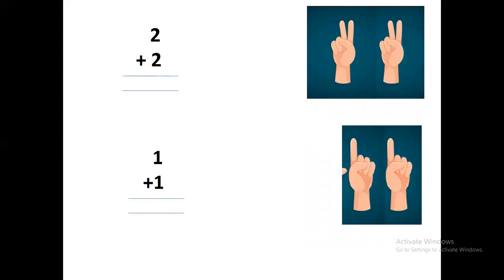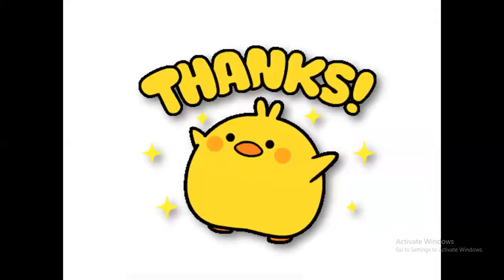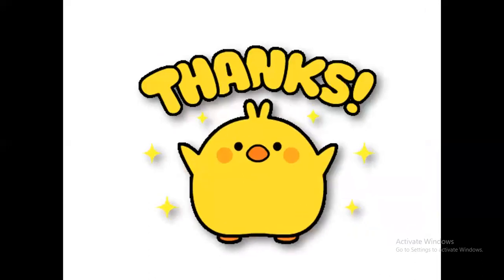On one hand you have to open two fingers, and on the other hand you have to open two fingers. Count all together: one, two, three, four. The answer is four. Next sum is one plus one — one hand you open only one finger, and the other hand also one finger. Count: one, two. The answer is two. Thank you, stay safe and healthy!